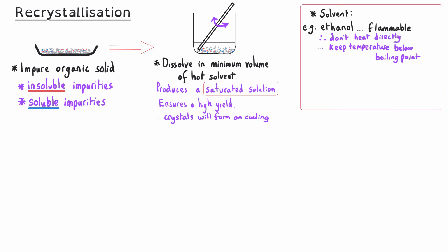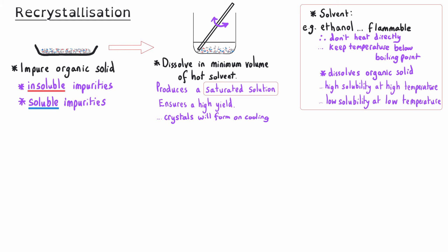Because many of the solvents we use are organic solvents such as ethanol, which is flammable, it's important that we don't heat the solvent by direct heating, and we must keep the solvent below its boiling point — below 78°C for ethanol. When choosing a suitable solvent, it must actually dissolve the organic solid we're seeking to purify. Our solid needs to be highly soluble in that solvent at high temperatures, but have low solubility at low temperatures. Ideally, the impurities should remain soluble in the solvent even at low temperature.